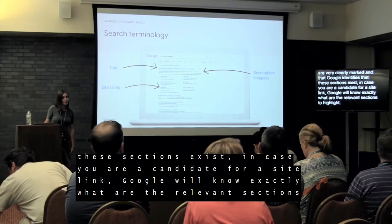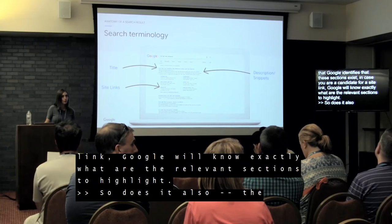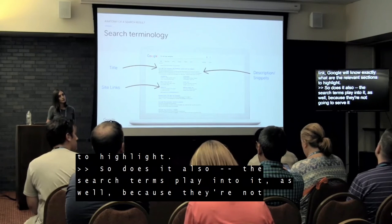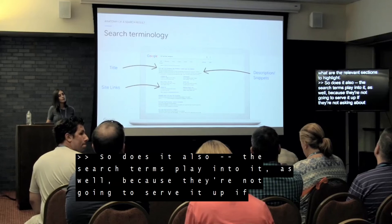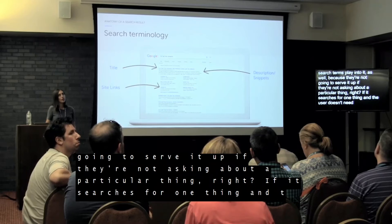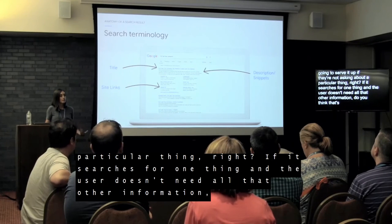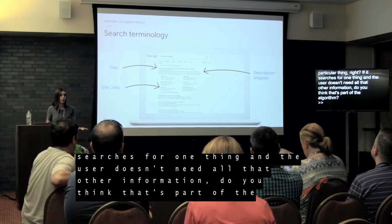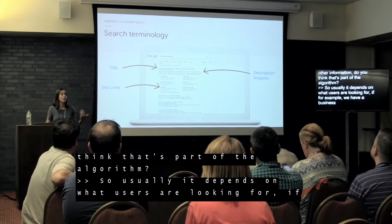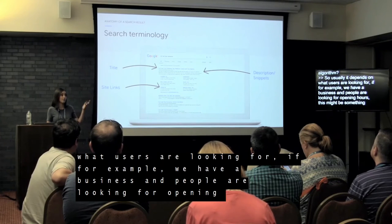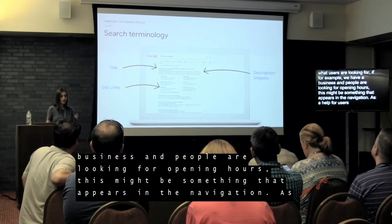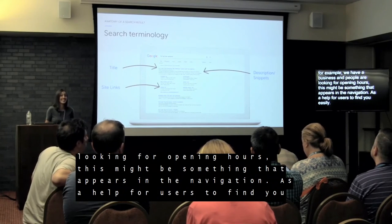A follow-up: do search terms play into which site links appear? Usually it depends on what users are looking for. For example, if you have a business and users are searching for opening hours, that section might appear as a navigation aid in the results. But that's about all that can be said on the algorithm side.